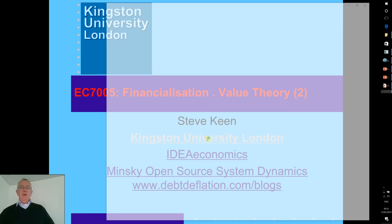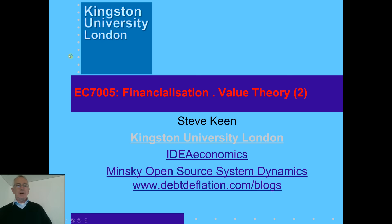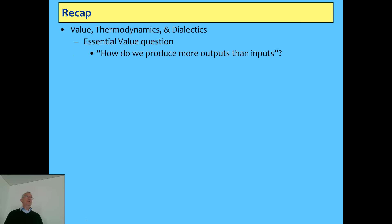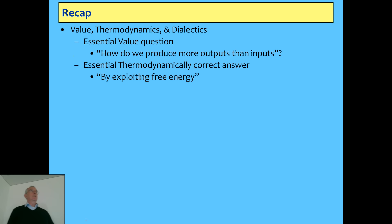So last week I talked about value and thermodynamics in general and finished up with talking a bit about dialectics, but there's much more to cover on that today. The essential question is how do we produce more outputs than inputs, which the physiocrats really seriously answered and got right given what they knew at the time — exploiting free energy, which they thought was only agriculture, but in fact it's any form of energy we find, not just solar energy but coal, nuclear, et cetera. That's the equation I derived, which basically gives energy an essential role in production.